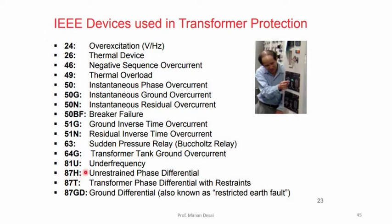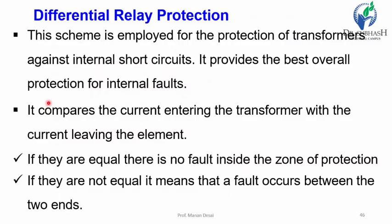Today we will discuss relay number 87 — differential protection. There are three types: 87H means unrestrained phase differential, 87T means transformer phase differential with restraint, and 87GD means ground differential, also known as restricted earth fault protection.